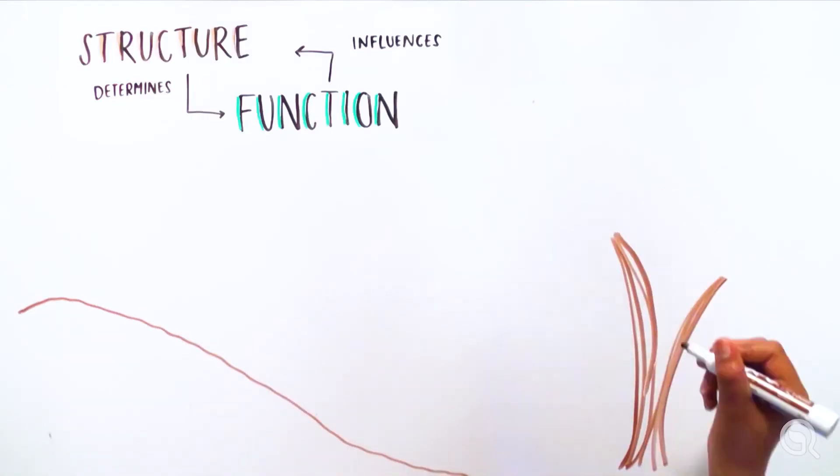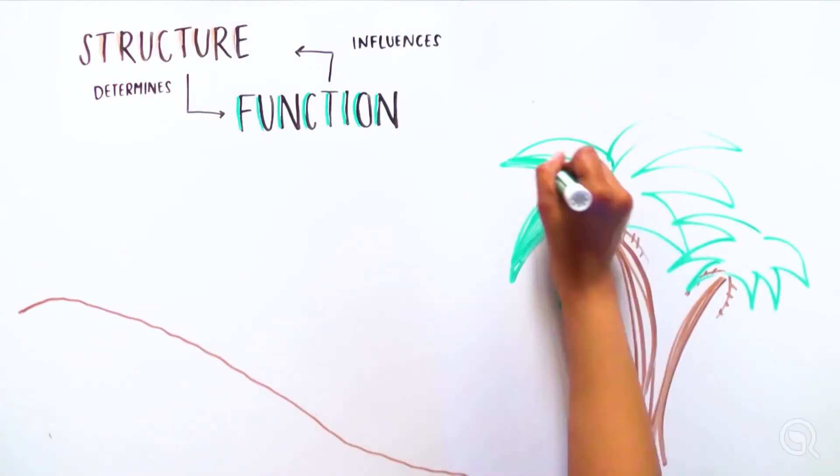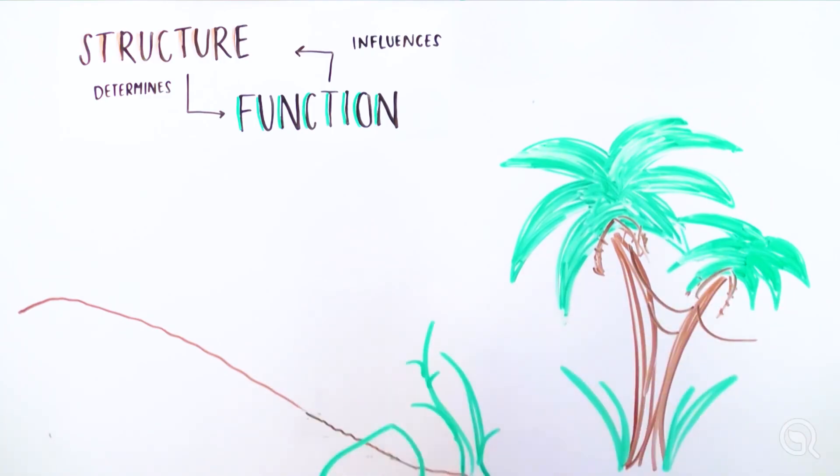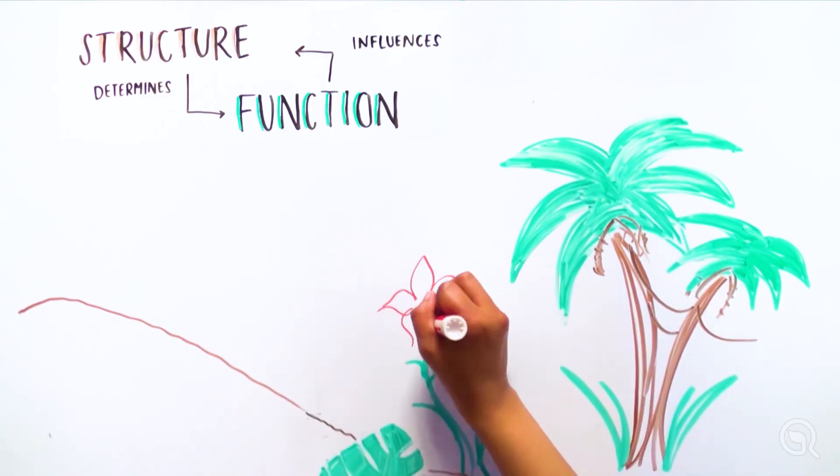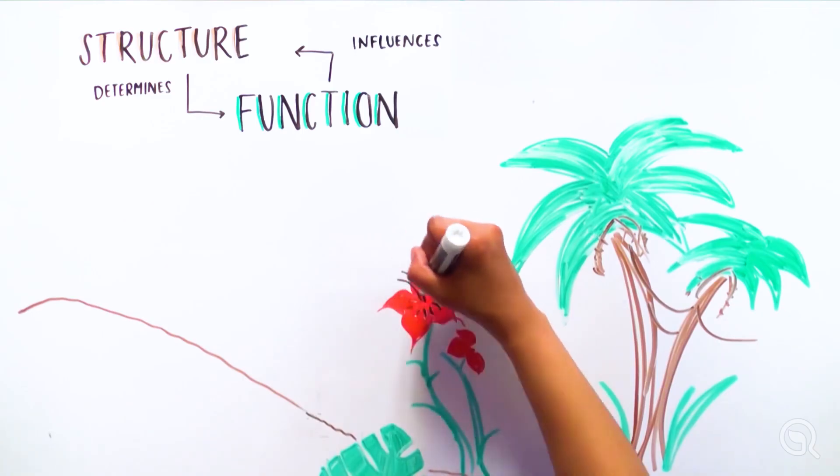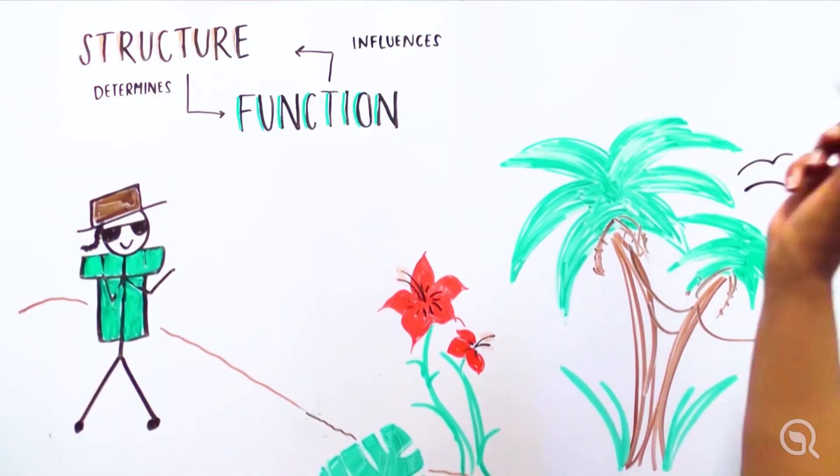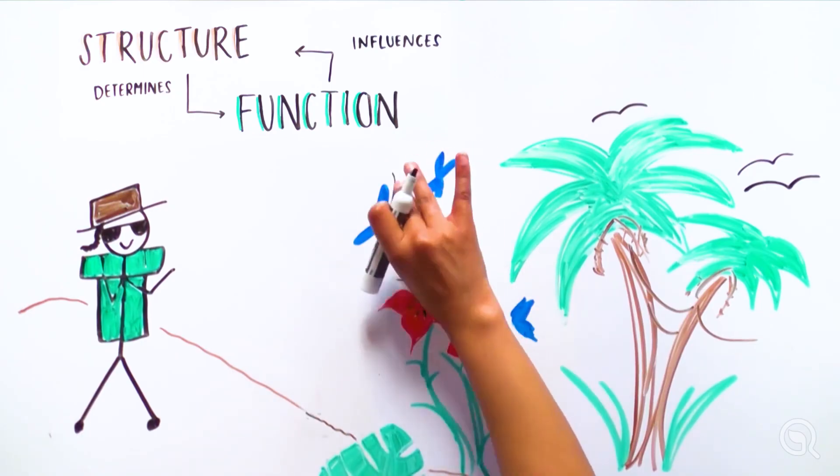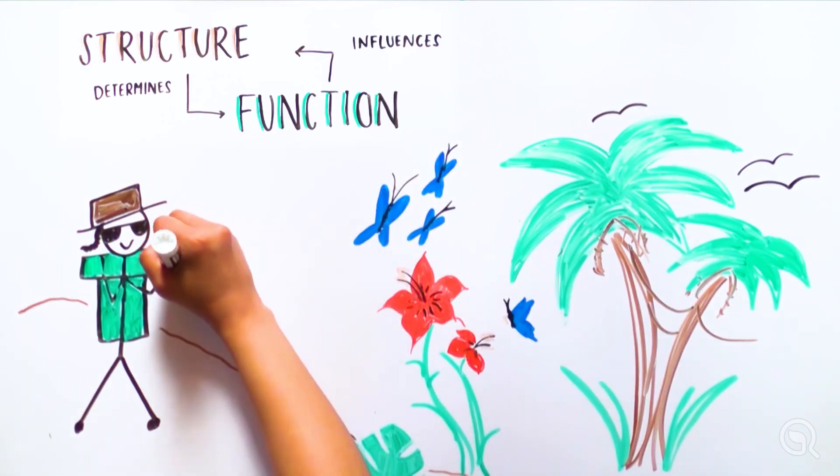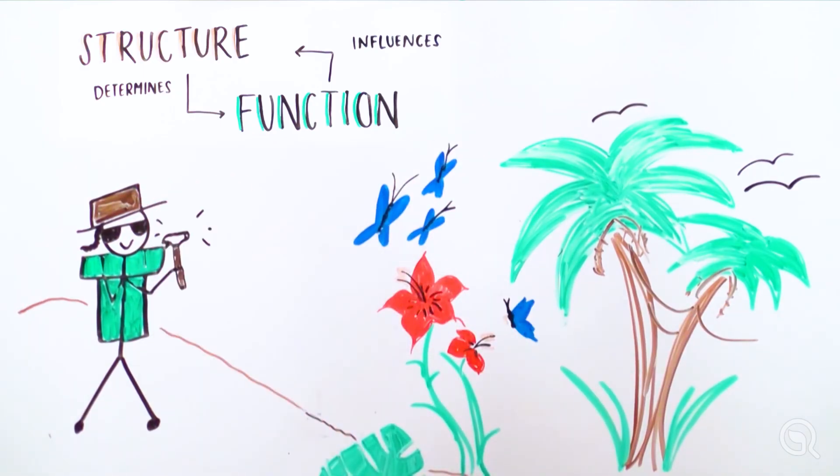Structure determines function and function also influences structure. If the structure of an ecosystem, body system, or molecule changes, the function changes. This principle makes sure that biological systems function properly since each cell and molecule is as precisely structured as a hammer.